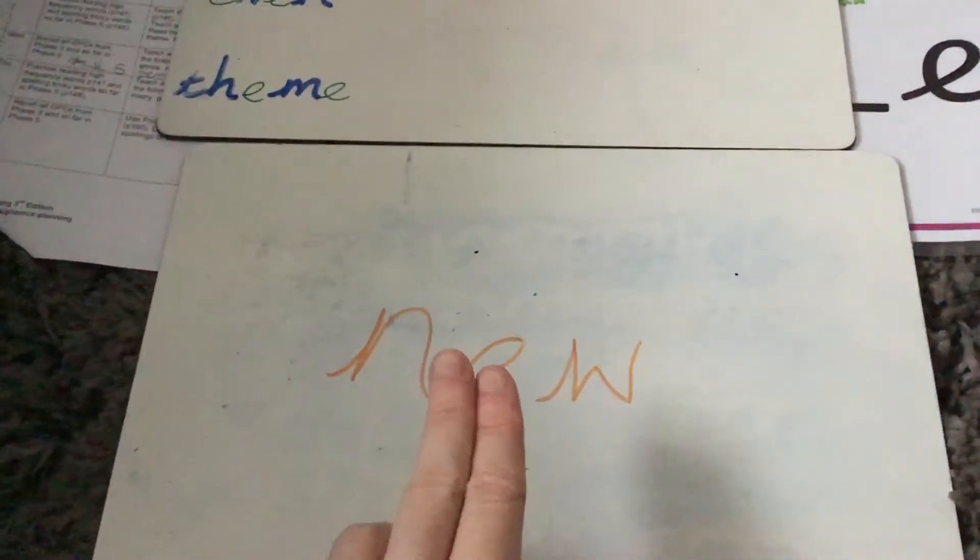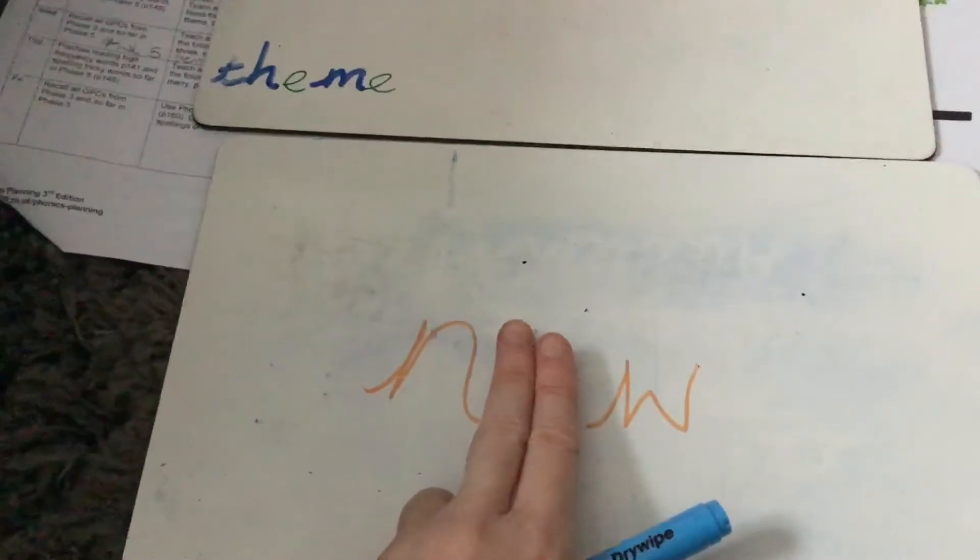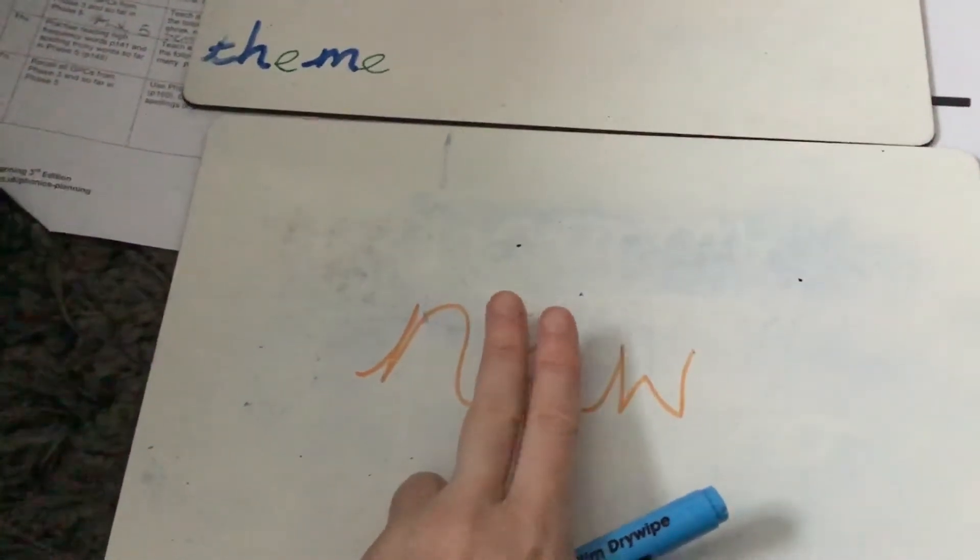So I'm going to hide one of the letters and can you tell me which one has been hidden? So now I've just got N-W. What letter's missing? Boop! The E! Well done!